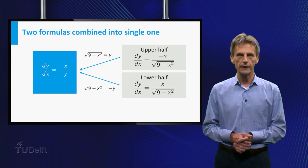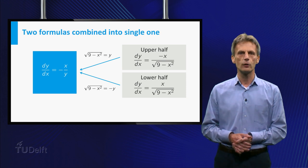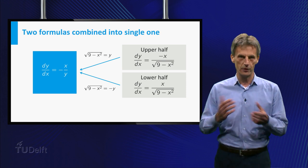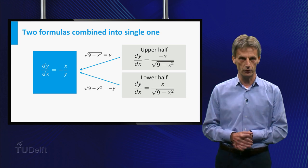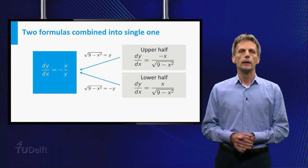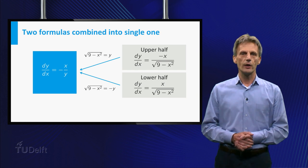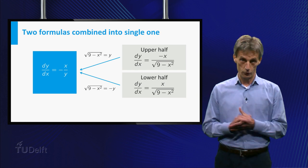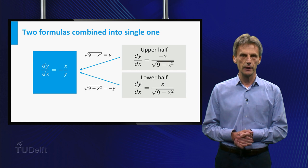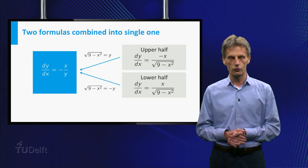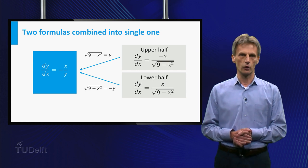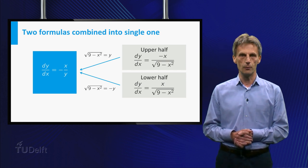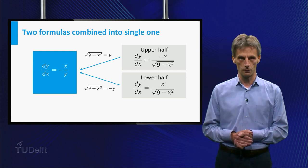This technique is called the technique of implicit differentiation. In the case of the circle we still could calculate the slopes of the tangents without this new technique, but of course not all curves are as simple as a circle.